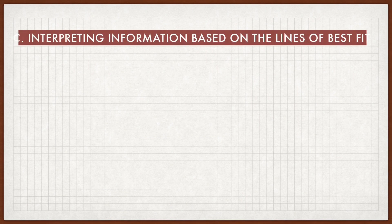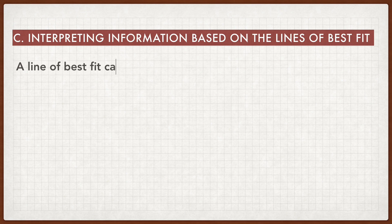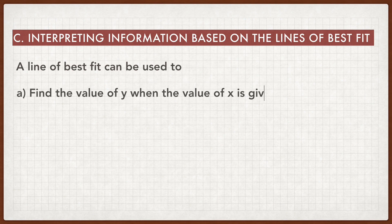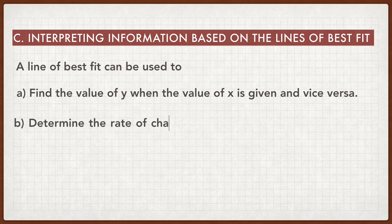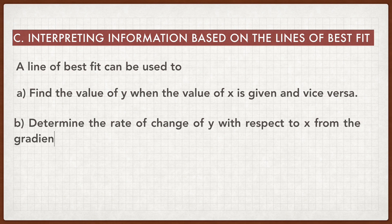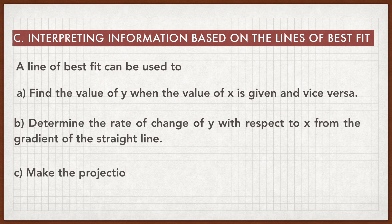Besides forming the equation of the straight line, we also need to interpret information based on the line of best fit. A line of best fit can be used to find the value of y when the value of x is given, and vice versa. We can also determine the rate of change of y with respect to x from the gradient of the straight line, and make projections on the values of the variables.